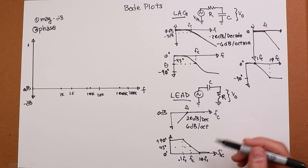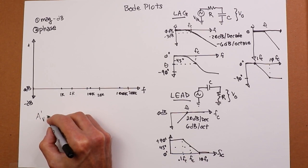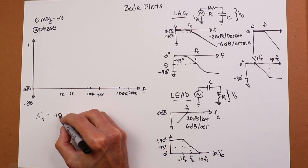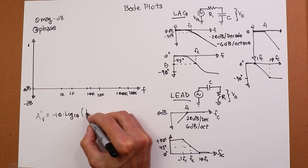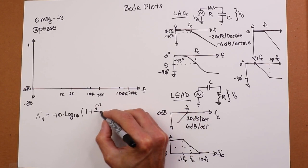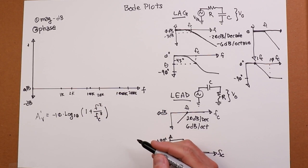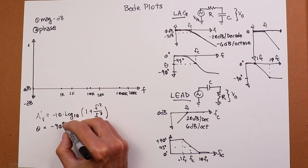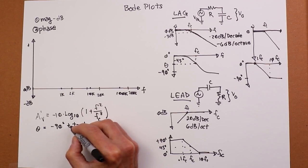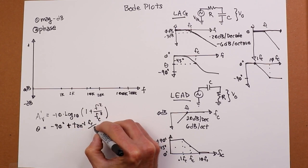The gain for the lag is negative 10 times base 10 log of the quantity 1 plus f squared, where f is the frequency of interest, divided by the critical frequency squared. So you can just throw the value in here and see what you get. The phase shift on this is equal to negative 90 degrees plus the arctan of fc over f. So that describes this curve right here. That's your lags.